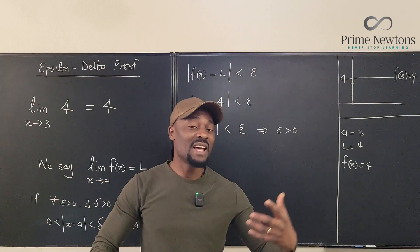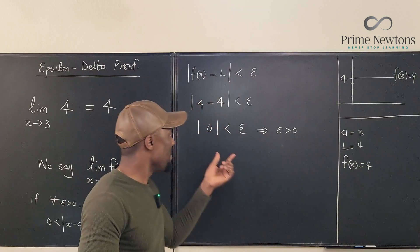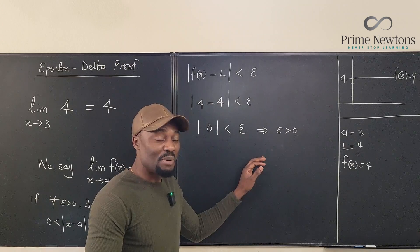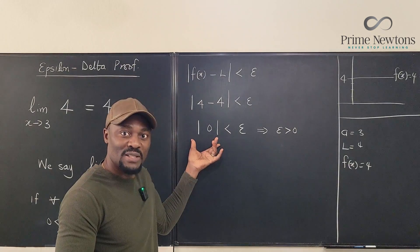Now in finding that delta, we're restricted by whatever we have here. That's why we usually would factor out and divide. But now we don't have anything to restrict us.